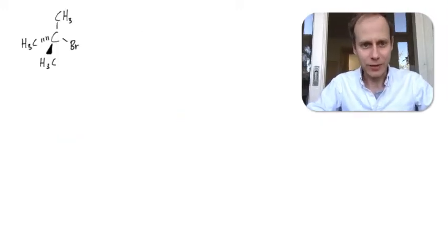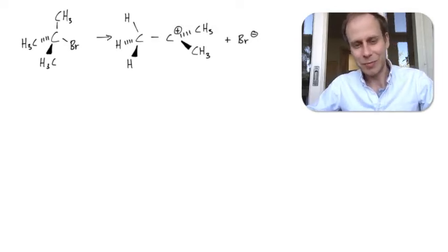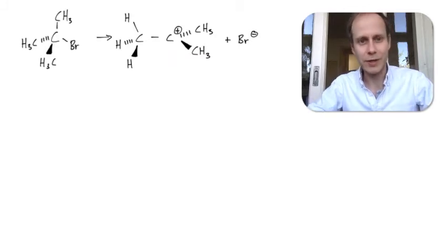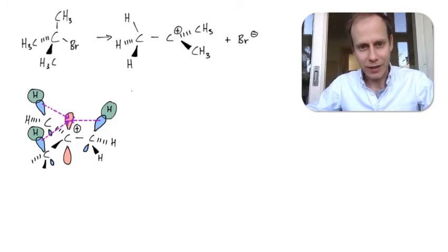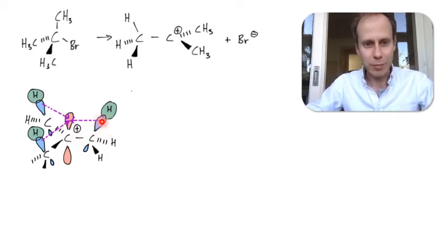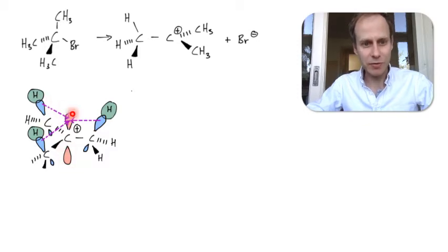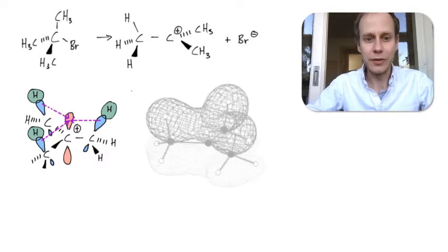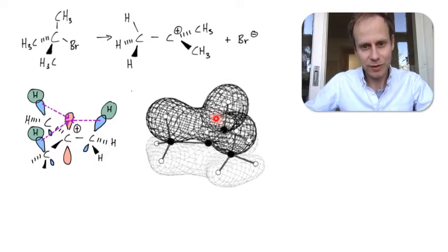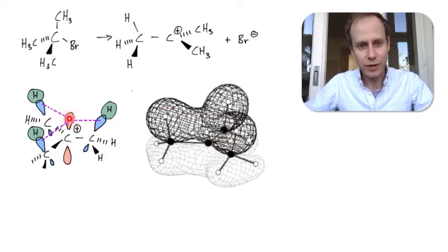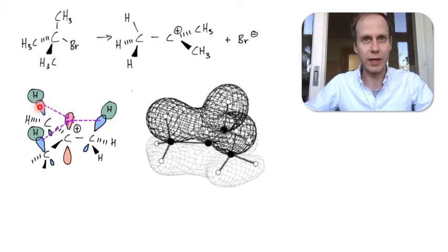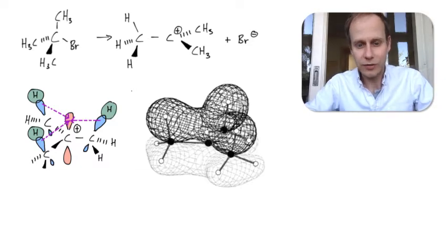Here's our halogeno alkane. It's an E1 reaction, so it forms a carbocation intermediate on its own without any interaction with the hydroxide. This carbocation is stabilized by inductive effects and also by hyperconjugation, where sp3 sigma bonds from the methyl groups overlap with the empty p orbital of the carbocation. A computer simulation shows the delocalization of electrons by this hyperconjugation — the surface plot shows the area where electrons can be found, which lowers the energy and stabilizes the carbocation.